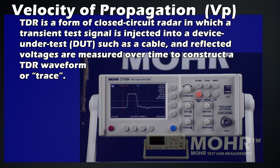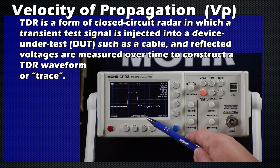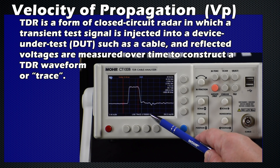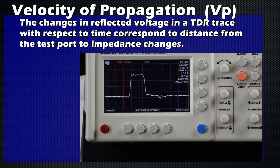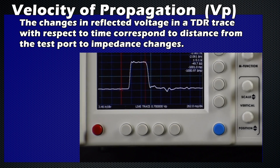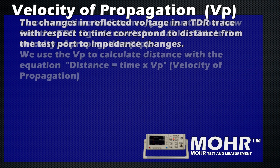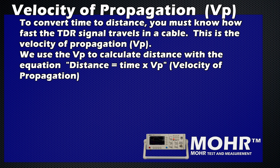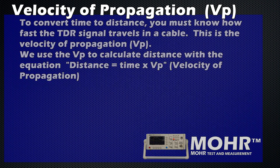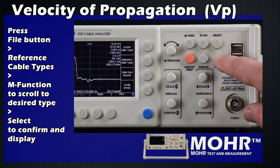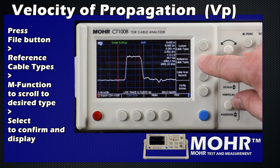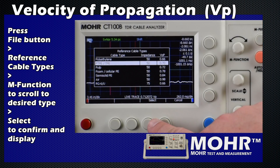First, we need to set the velocity of propagation, or VP. The accuracy of the distance to fault measurement depends on this value being accurate. This is the fraction of the speed of light that electricity travels in this cable. You can get this number from your manufacturer in the CT100B file function, or you can set the VP manually.